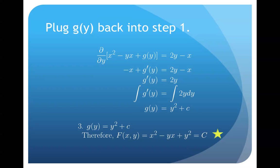So you'll get that your function, the f that you're looking for, is equal to x squared minus yx plus y squared, and it equals C. So if we didn't have an initial value, you could stop here. But we do have an initial value, so we need to figure out what c is.